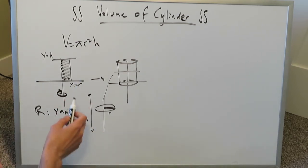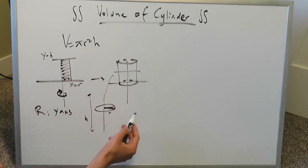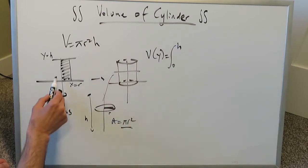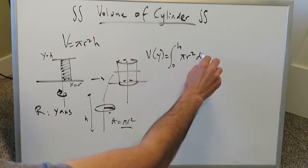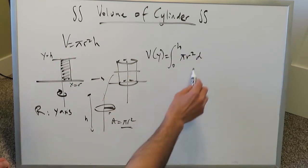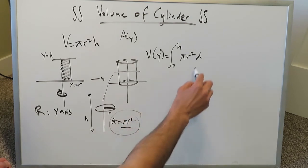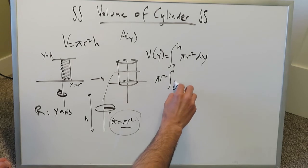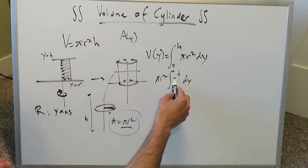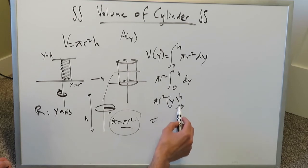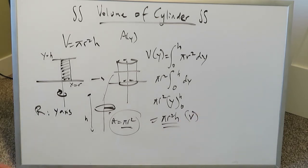We have identified Y equals H and X equals R, and we have everything we need to integrate and do our volume determination. The slice has a radius of R, and area equals pi R squared. Volume with respect to Y is equal to the integral from 0 to H along the Y axis of pi R squared — our A of Y — with respect to dY. You can bring pi R squared out as a coefficient, integrate 0 to H dY. The antiderivative gives pi R squared times Y evaluated from 0 to H, and you end up having pi R squared H — the volume we're looking for with respect to dY.